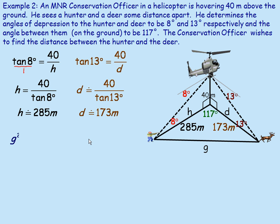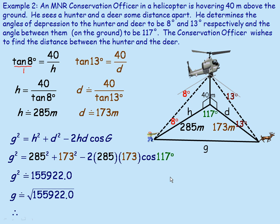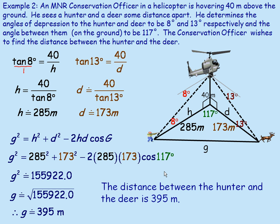We use the cosine law to find side G: G² = H² + D² − 2HD·cos(117°). Filling in the values: G² = 285² + 173² − 2 × 285 × 173 × cos 117°. Remember your order of operations — calculate the last term before subtracting. G² works out to approximately 155,922, so G = √155,922 ≈ 395 meters. The distance between the hunter and the deer is 395 meters, and that's the end of the lesson.